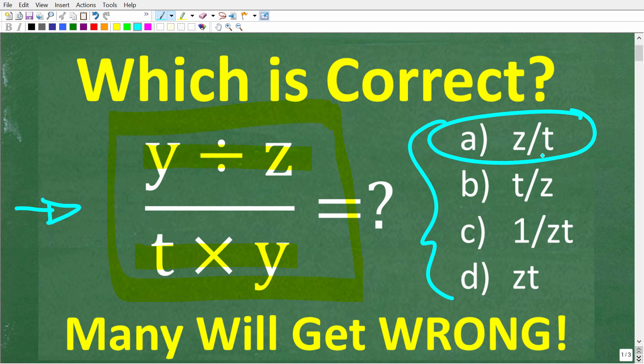So a is z over t, b is t over z, c is 1 over zt, and d is z times t.